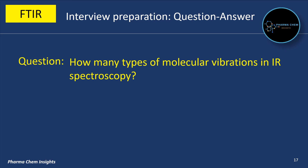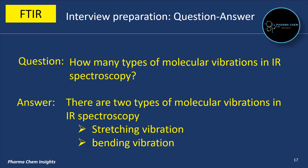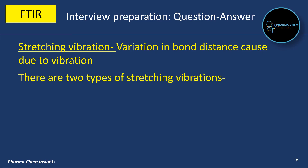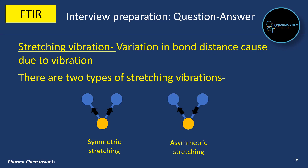How many types of molecular vibrations are there in IR spectroscopy? There are two types: stretching vibration and bending vibration. Stretching vibration is a variation in bond distance caused due to vibration. There are two types of stretching vibration: symmetric stretching vibration and asymmetric stretching vibration.